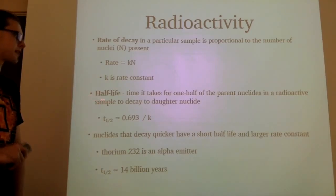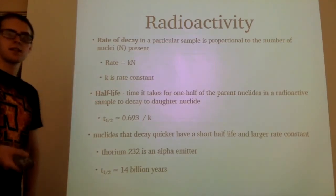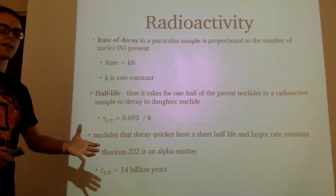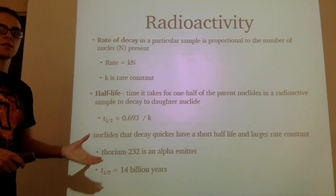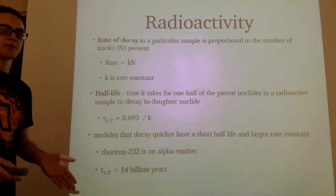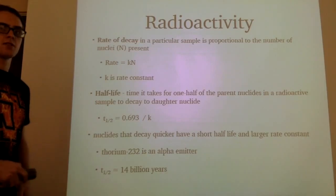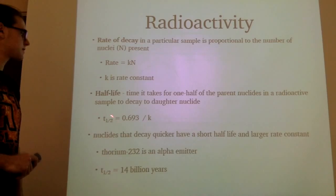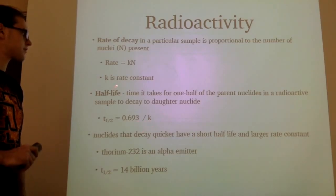To monitor the rate at which samples decay, we use half-life, which is the time it takes for half the amount of a parent nuclei in a radioactive sample to decay. This can be calculated as half-life equals 0.693 divided by k, which is our rate constant.